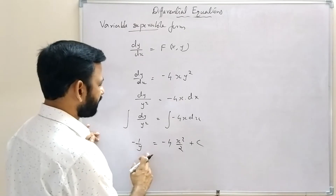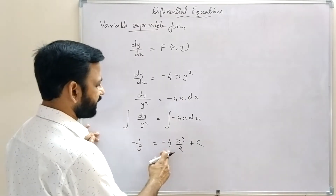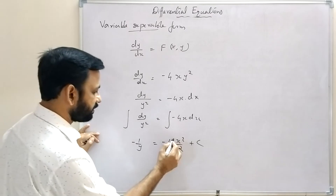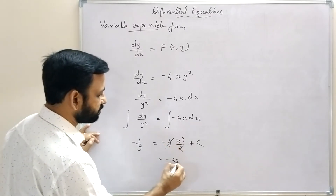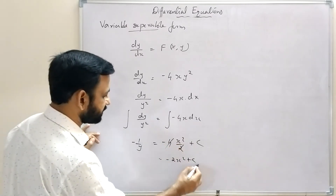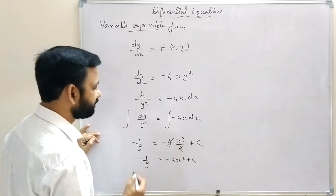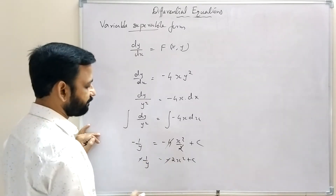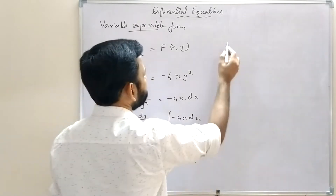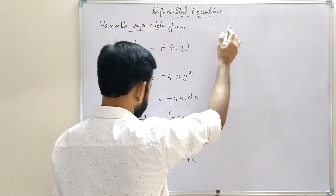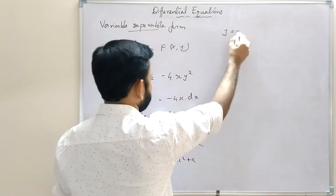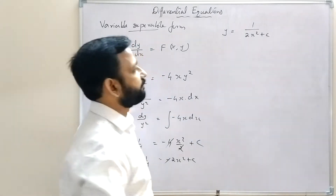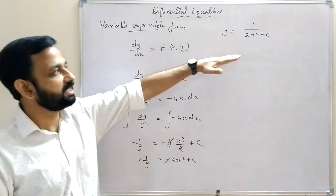So we get -1/y = -4x²/2 + c, which simplifies to -1/y = -2x² + c. Both sides have negatives, so cancelling gives 1/y = 2x² - c, and taking the reciprocal: y = 1/(2x² + c). This is the general solution.